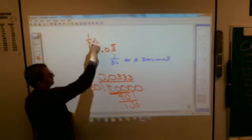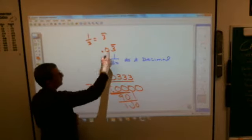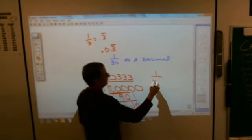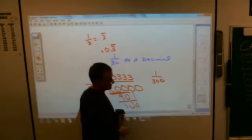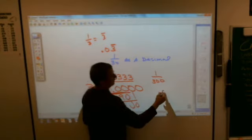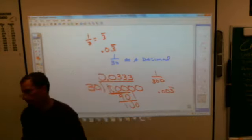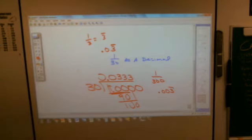1/3 is 0.3 repeater. 1/30 would be 0.03 repeater. You could probably guess what 1/300 would be. Anybody want to speculate? 0.003. 0.003, Peter. How about there? I think that's exciting, don't you think? I know Jalen thinks it's an eternity.